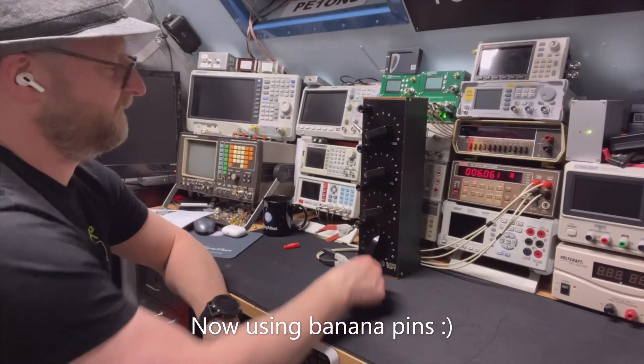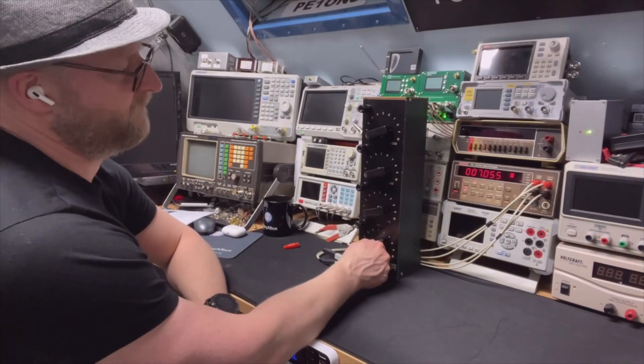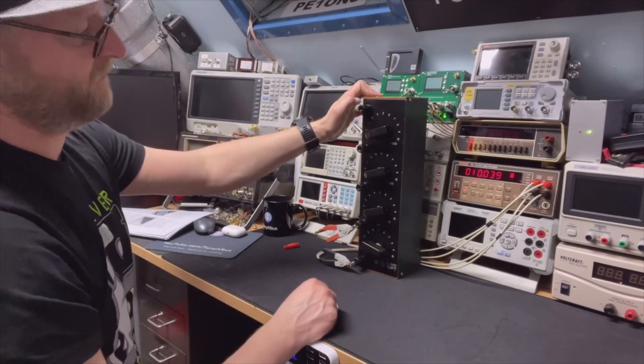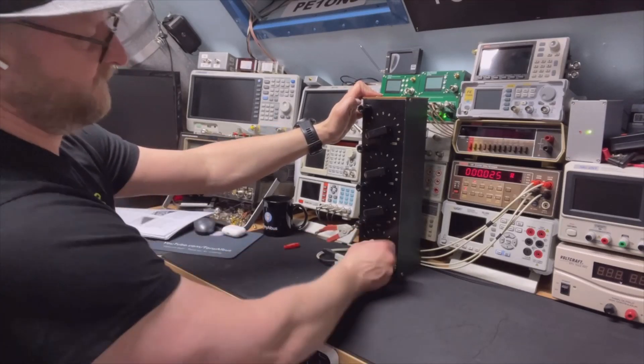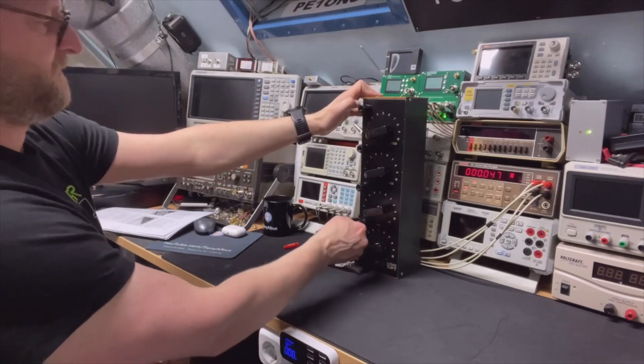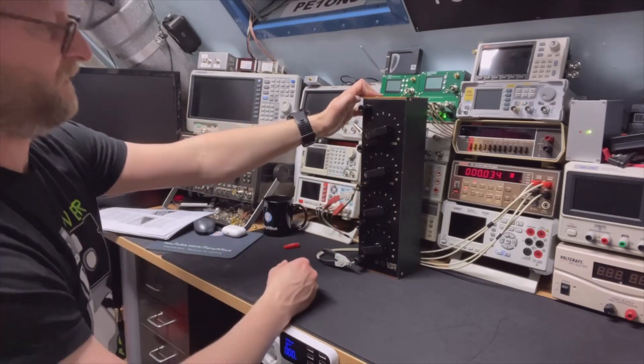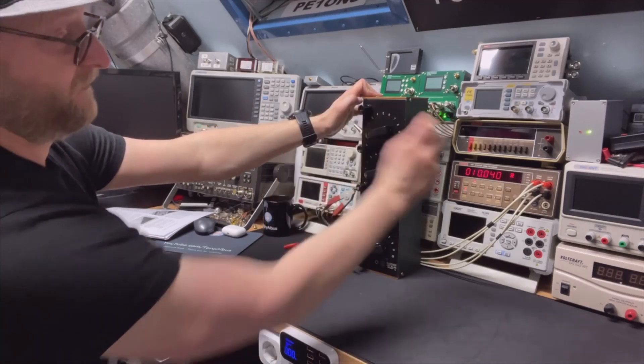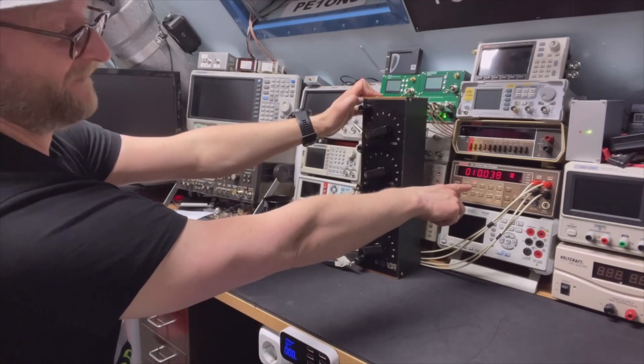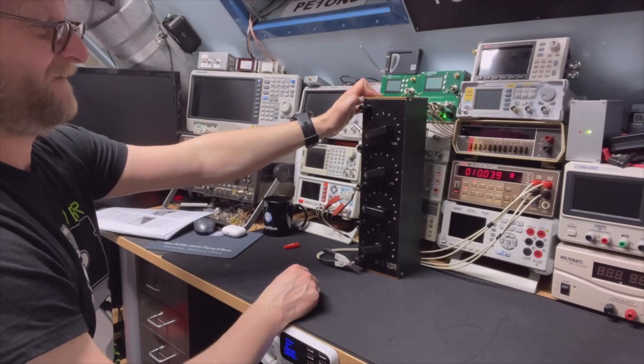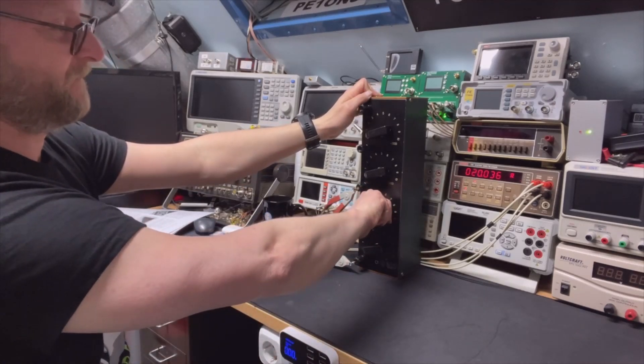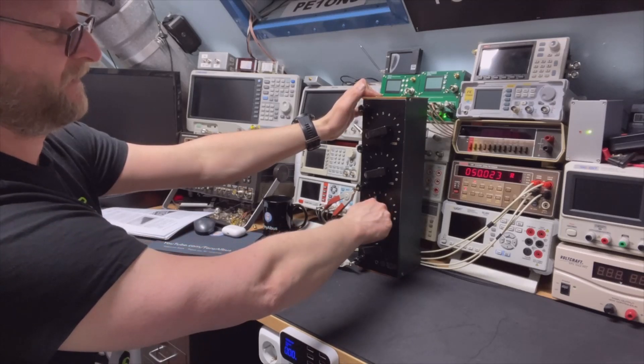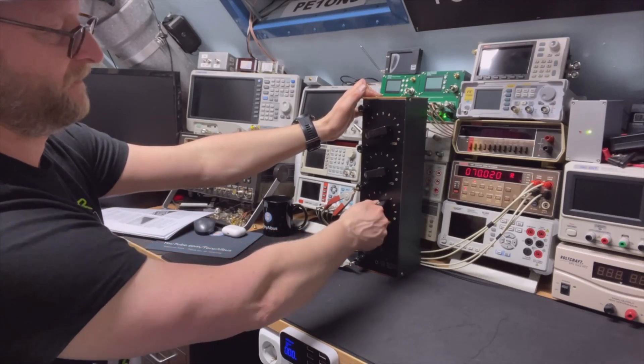Maybe we can get it even lower. Well, that is good. 0.16. Now, let's go to our first decade resistance. One ohm, two, three, four, five.